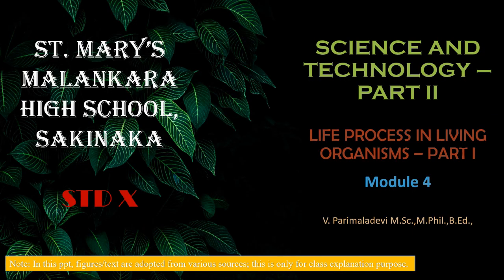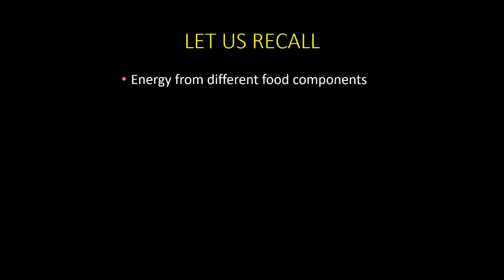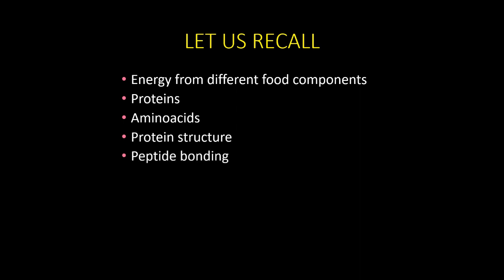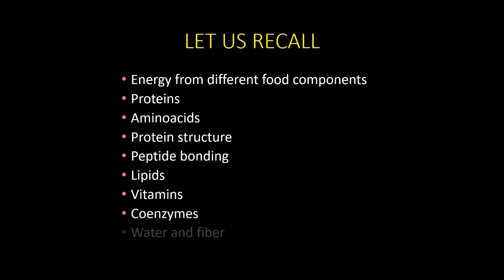Dear students, welcome back to Module 4 of Life Processes and Living Organisms, Part 1. In the last module, we learned how we get energy from food components like carbohydrates, proteins, and lipids. We also learned about amino acids, protein structure, peptide bonding, vitamins, coenzymes, and how water and fiber are useful for the human body. We will continue with the rest of the chapter in this module.